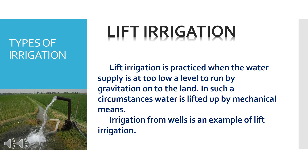Lift Irrigation is practiced when the water supply is at too low a level to flow by gravitation onto the land. In such circumstances, water is lifted up by mechanical means — it is not a gravitational flow. We have to use mechanical devices to lift the water in the lift irrigation process.